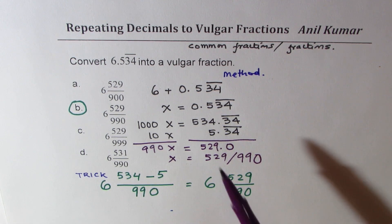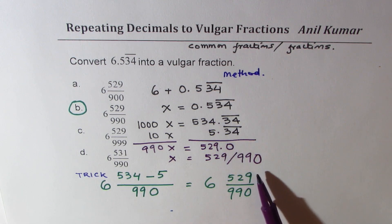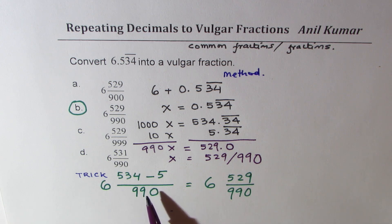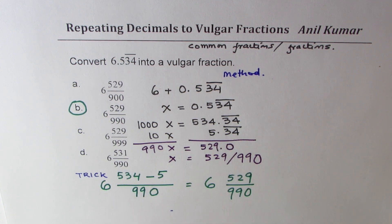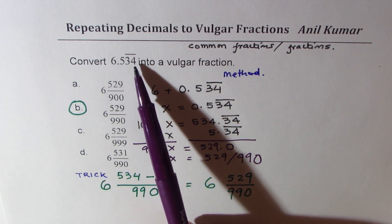All this procedure can in short be summarized by the shortcut method. So in the shortcut method what we have done here is anything before the decimal is a whole number, so that is 6. Now there are three digits out of which 34 repeats.